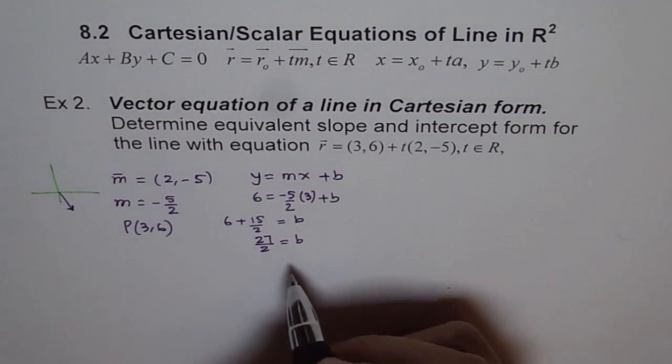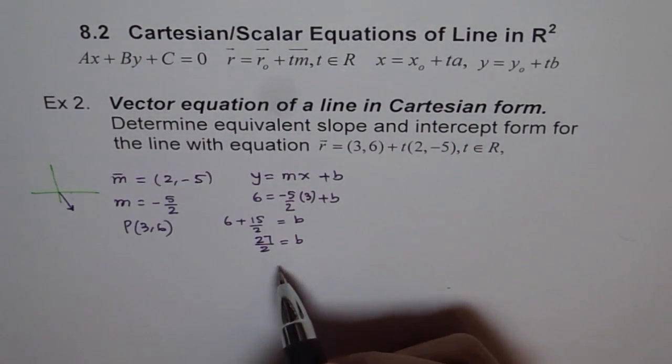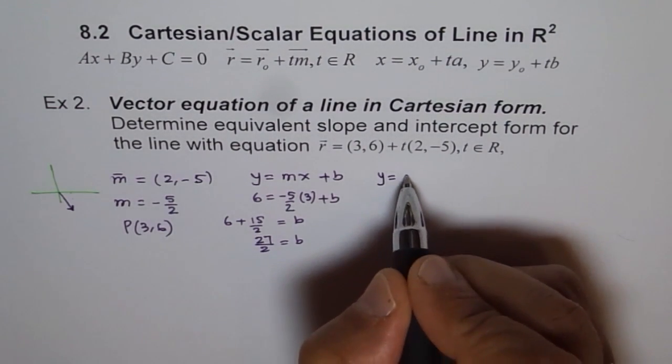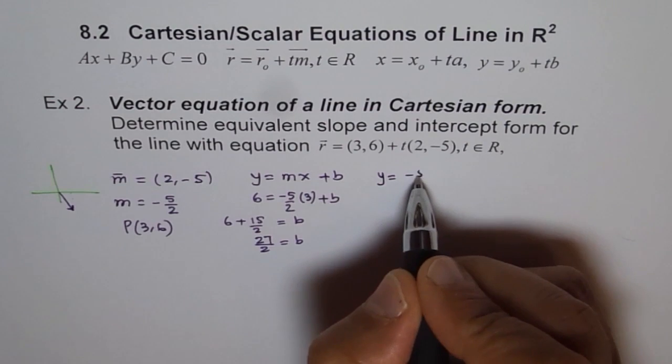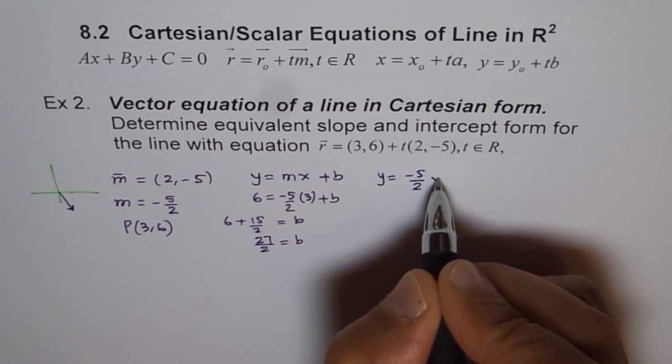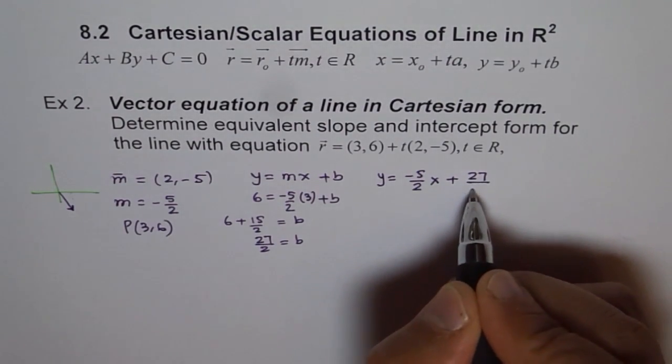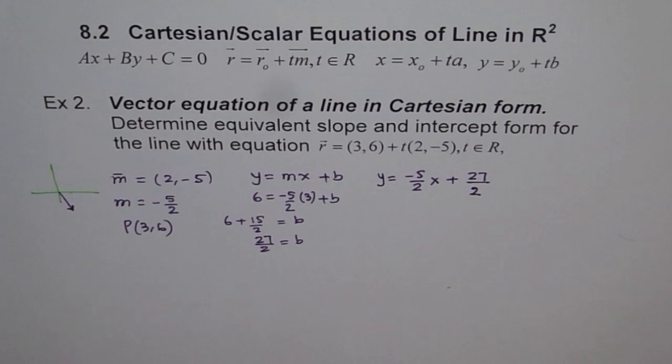And therefore we can write that the equation of this line is y equals to -5 over 2 x plus 27 over 2. So that's the way to find equation of a line in slope intercept form from the vector form, okay?